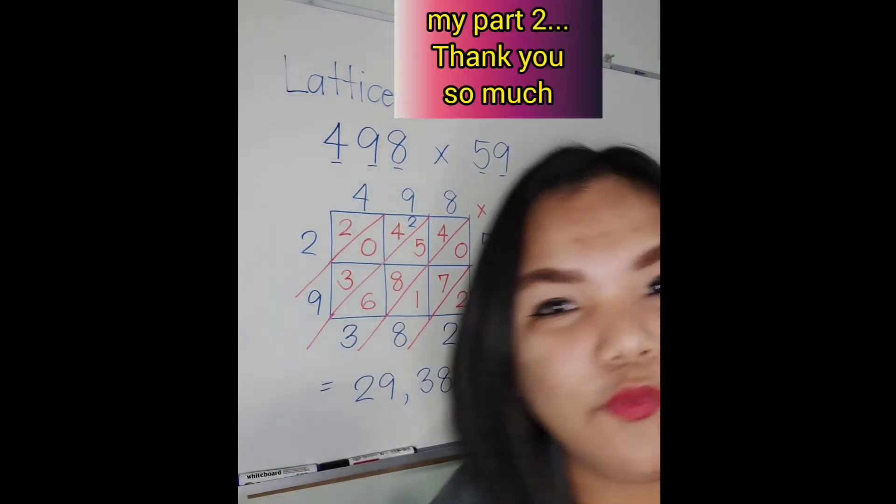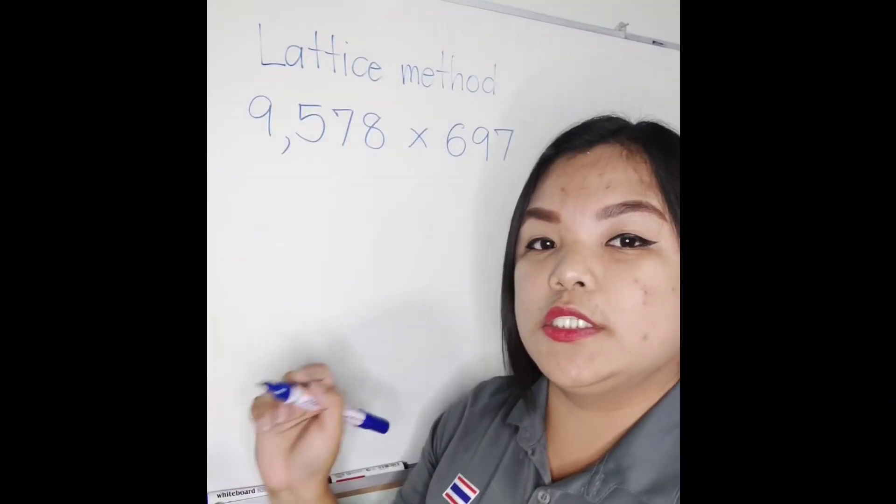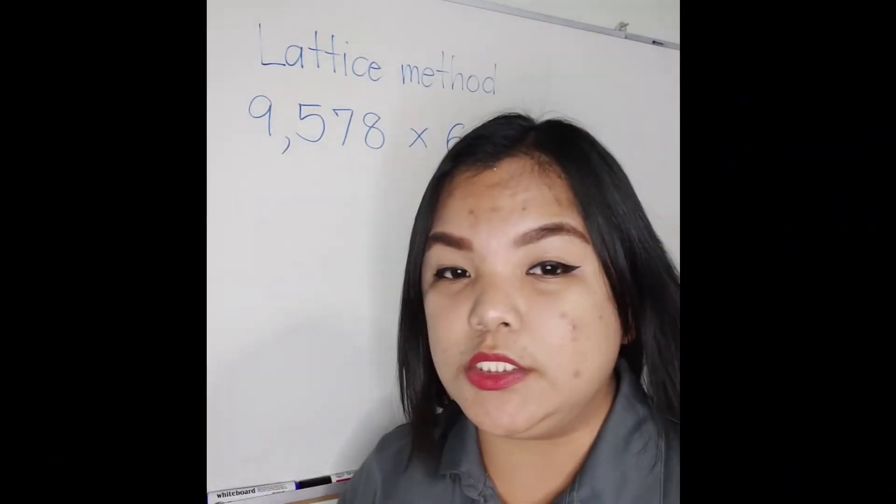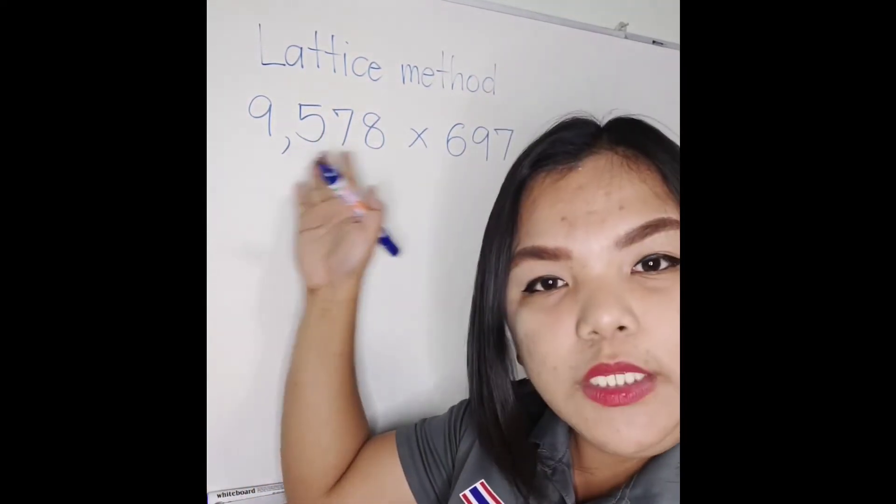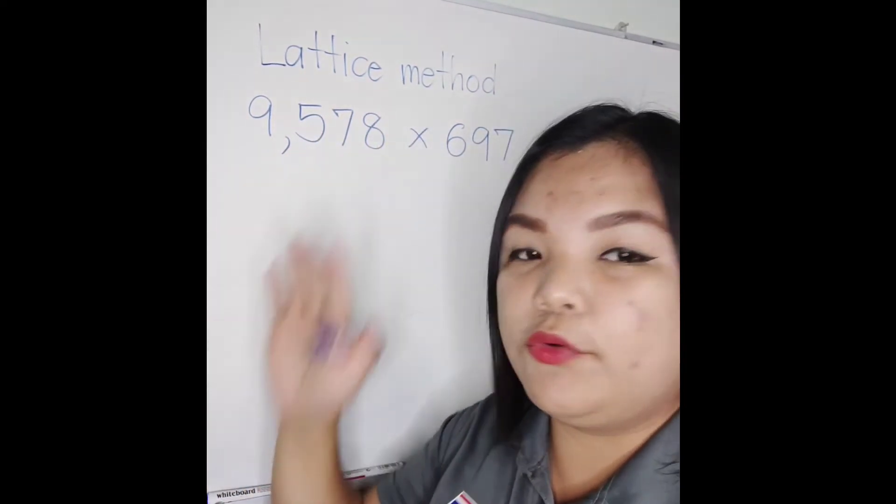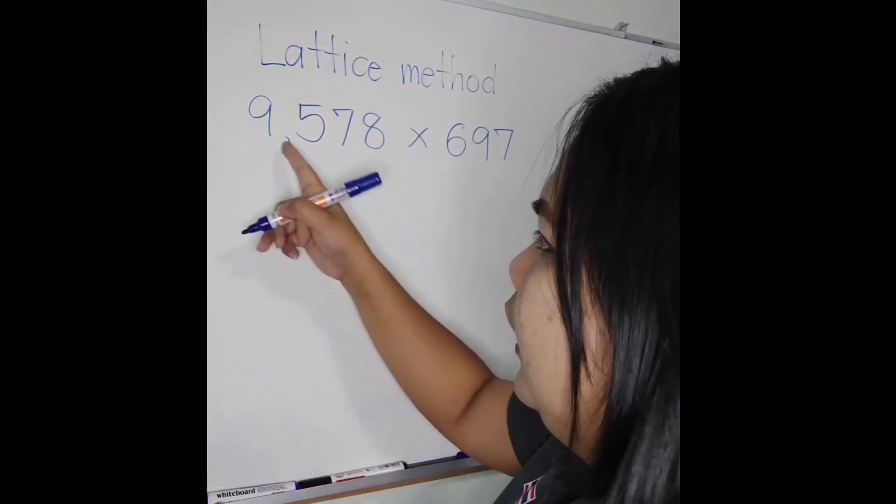We have four digits multiplied by three digits. So it's up to you how many digits you want. It can be three by three, four by four, it's up to you. Now, how many digits do we have?